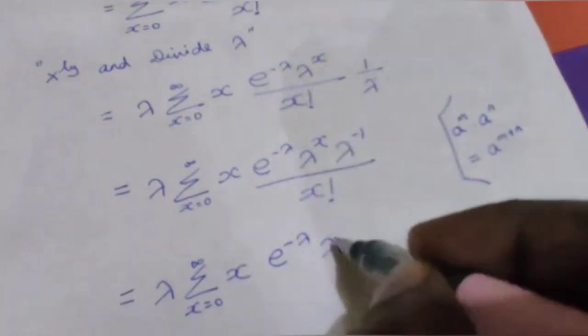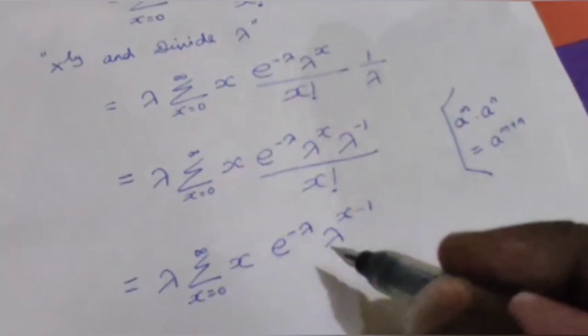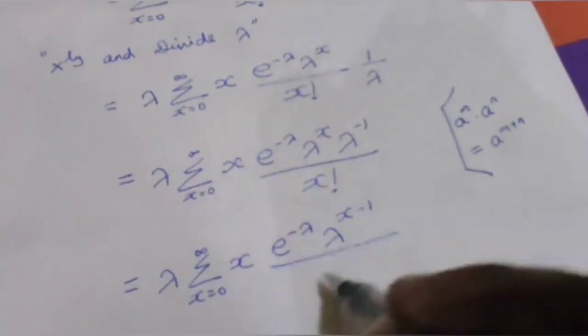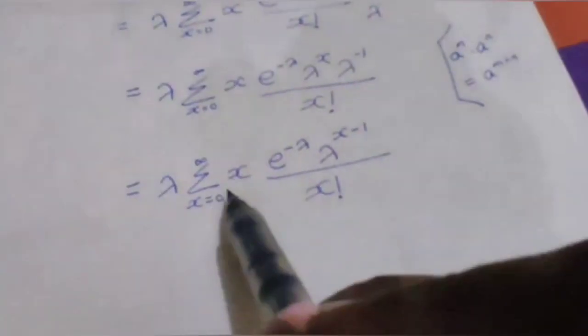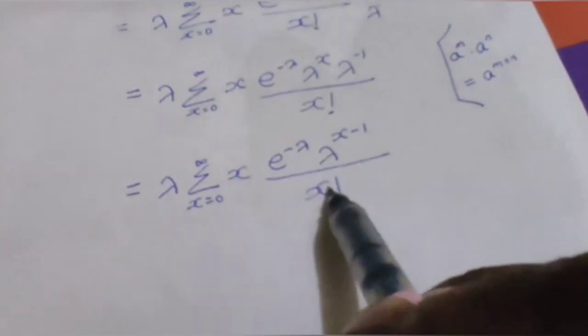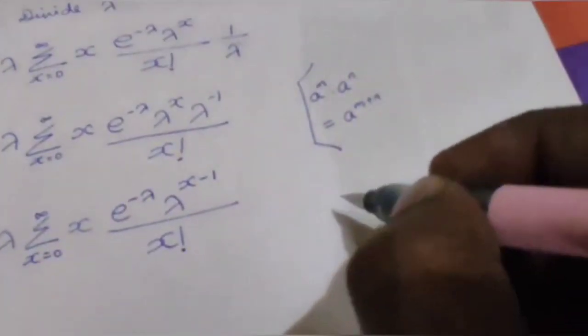We have x times e to the power minus lambda times lambda to the power x minus 1 divided by x factorial. Listen carefully: x factorial equals x times x minus 1 factorial, so x in the numerator and x in the denominator will cancel.